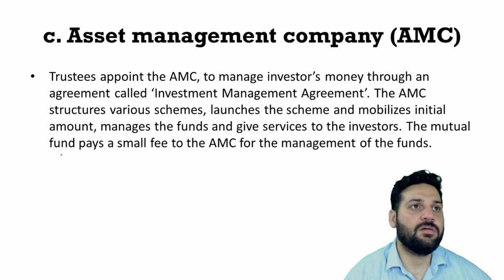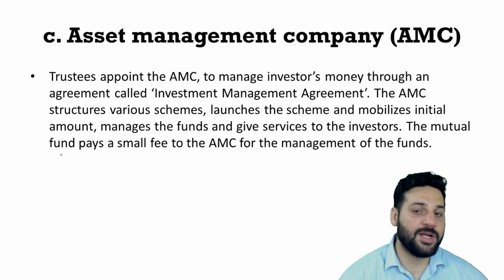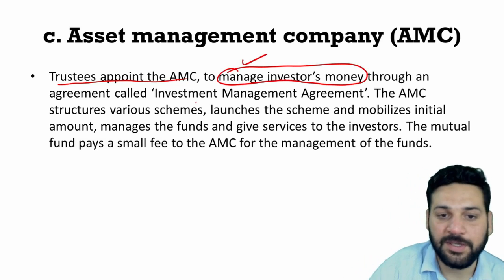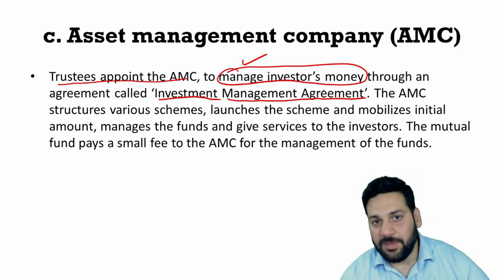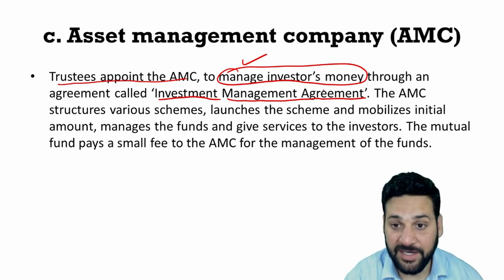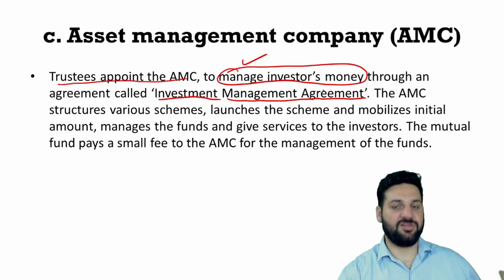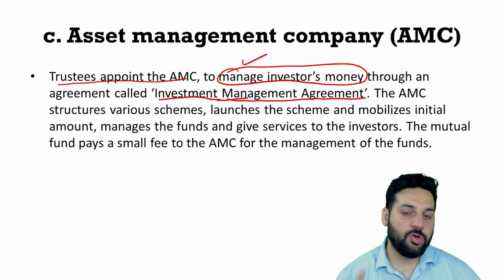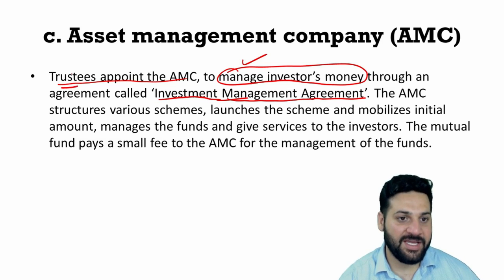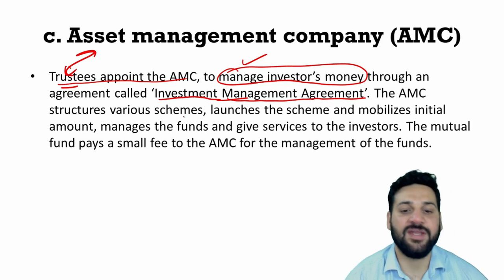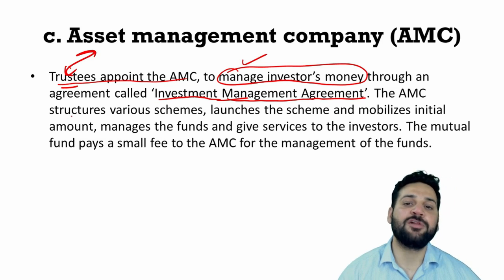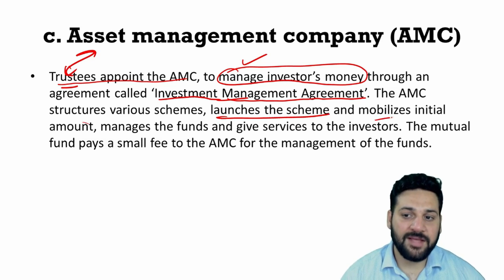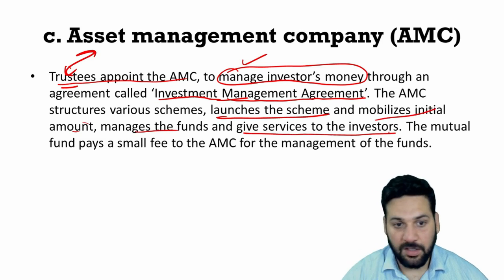The asset management company's function is to market the schemes and manage investors' money. The trustees appoint the AMCs through an agreement called the investment management agreement. Note: the trust deed is between trustees and sponsors, while the investment management agreement is between trustees and the asset management company. The AMC structures and launches various schemes, mobilizes the initial amount, manages the funds, and provides services to investors.